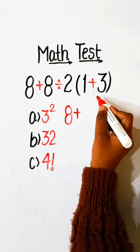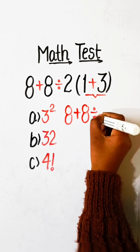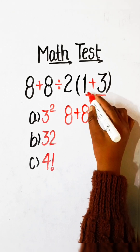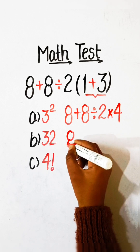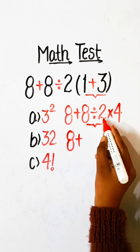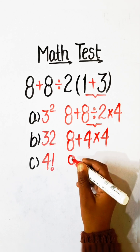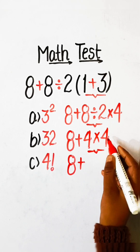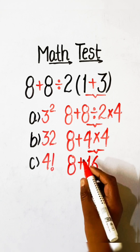8 plus — first we have to solve the bracket part. 8 divided by 2 multiplied by (1 plus 3 is 4). Now first we have to divide: 8 divided by 2 is 4, multiplied by 4. Then we multiply first: 4 multiplied by 4 is 16. So 8 plus 16 is 24.